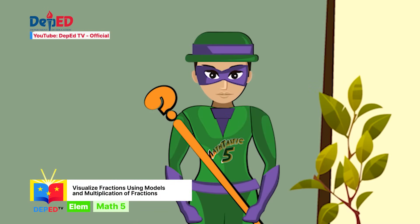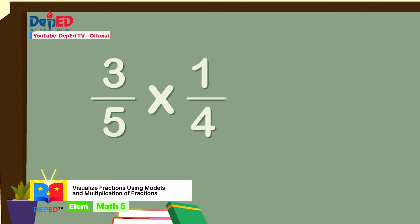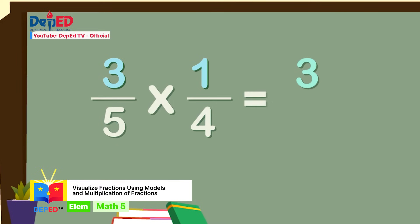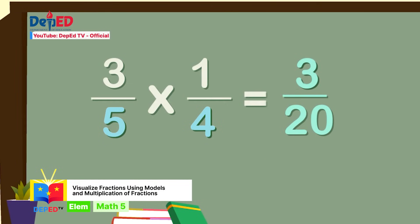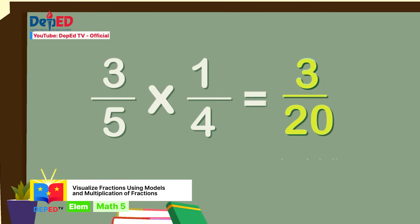Math heroes, are you ready for the drill? Find the product of three-fifths times one-fourth. Step one: multiply the numerators — three times one equals three. Step two: multiply the denominators — five times four equals twenty. So our answer is three over twenty. Step three: reduce to lowest term — in this case, three over twenty is already in its lowest term.